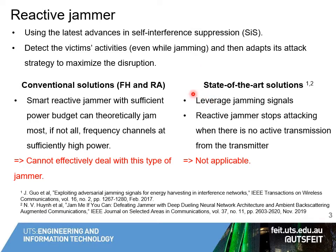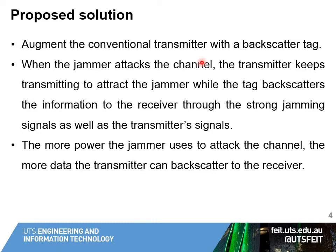Some state-of-the-art solutions have been proposed to address the limitations of conventional approaches. The key idea is that the transmitter can leverage the jamming signal using energy harvesting and ambient backscatter technologies. When the jammer attacks the channel, the transmitter can harvest energy from the jamming signal, or backscatter information on the jamming signal. However, a smart and reactive jammer can stop attacking the channel if there is no active transmission from the transmitter, so these solutions are not applicable. In this paper we propose a novel idea to address this problem.